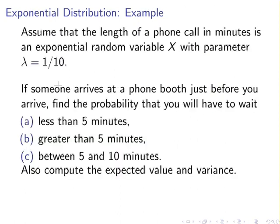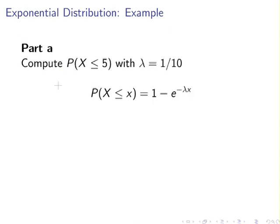Here is an example. Assume that the length of a phone call in minutes is an exponential random variable with a rate parameter of 1/10 (i.e., lambda = 0.1). If someone arrives at a phone booth just before you, find the probability that you have to wait less than 5 minutes, greater than 10 minutes, and between 5 and 10 minutes. Also compute the expected value and variance.